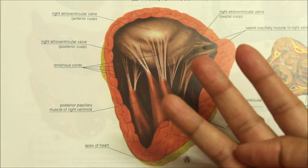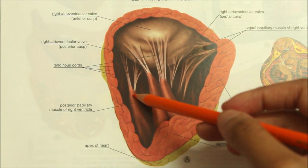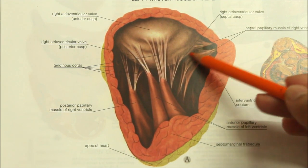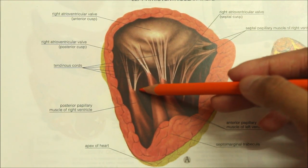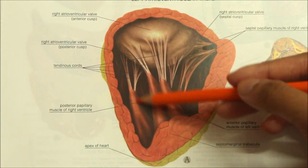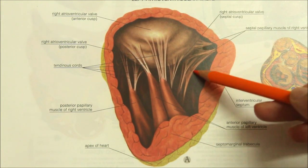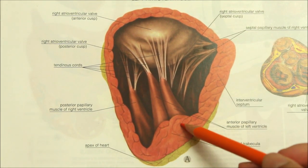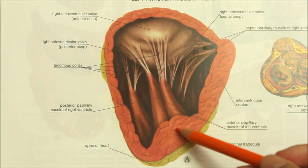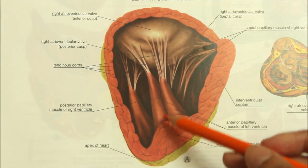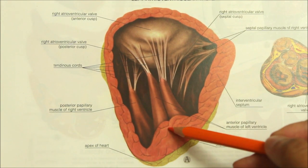There are three papillary muscles in the right ventricle: the anterior, the posterior, and the septal. The anterior papillary muscle is the largest. The posterior or inferior papillary muscle is small and irregular, and the septal papillary muscle is divided into a number of little nipples. The septomarginal trabeculae, or the moderator band, is a muscular ridge extending from the ventricular septum to the base of the anterior papillary muscle, and it contains the right branch of the AV bundle.